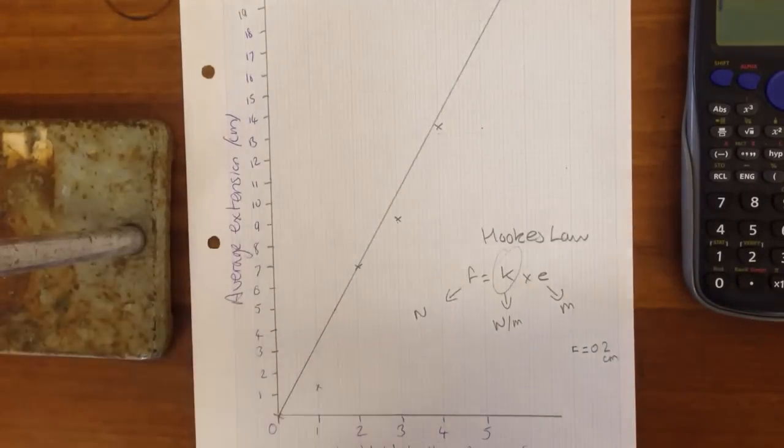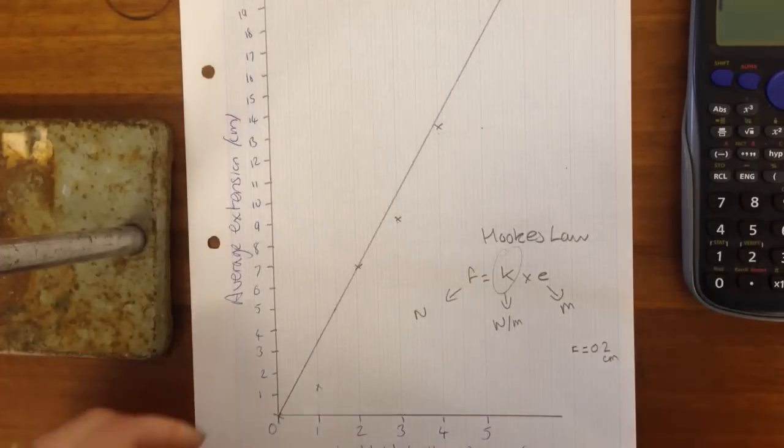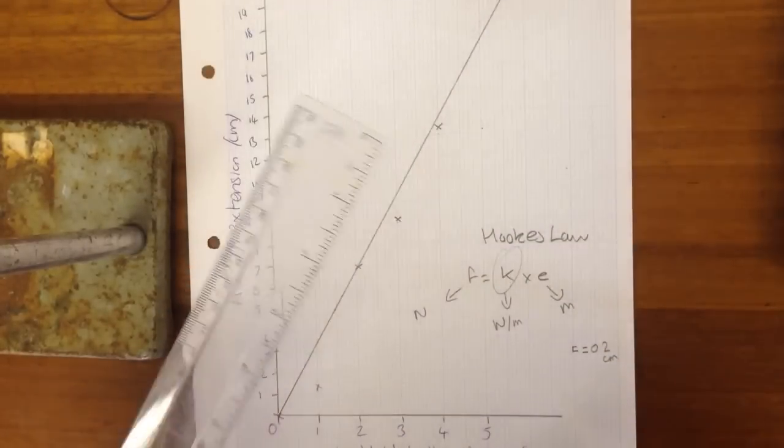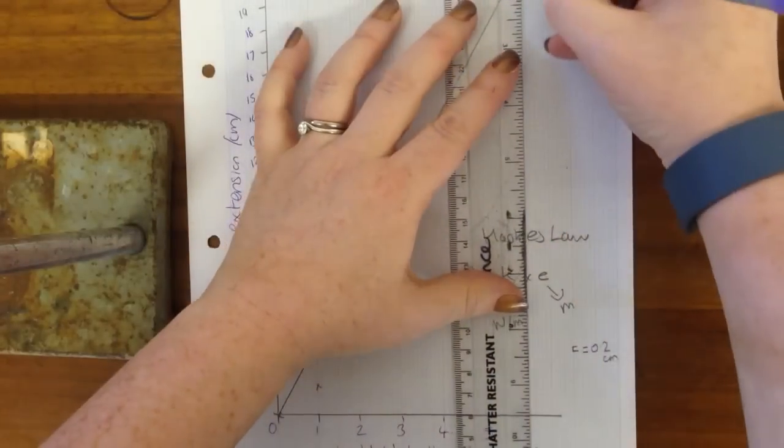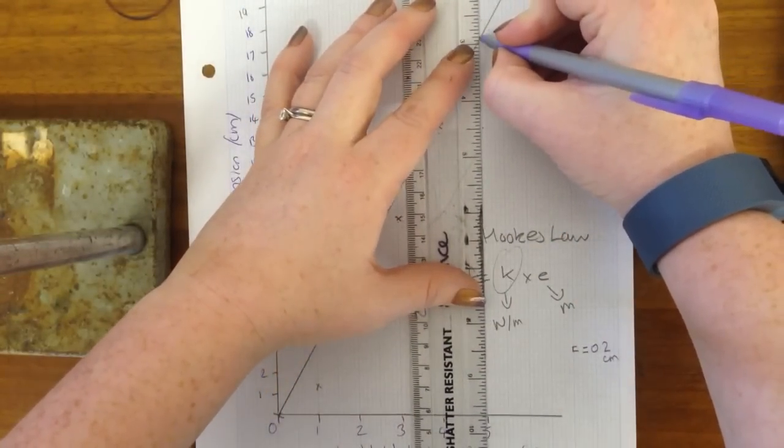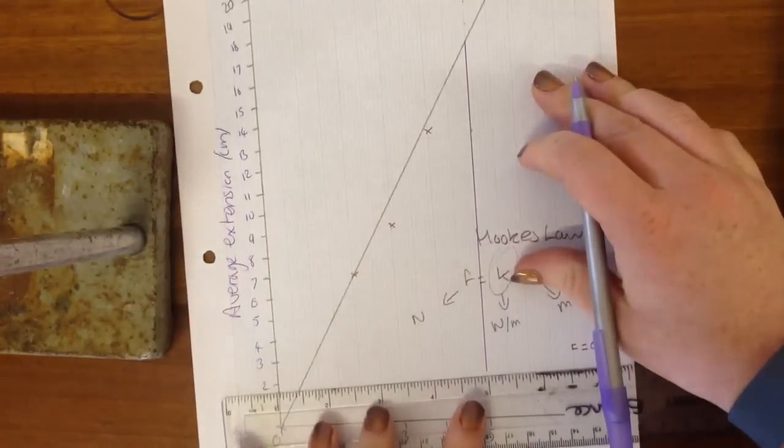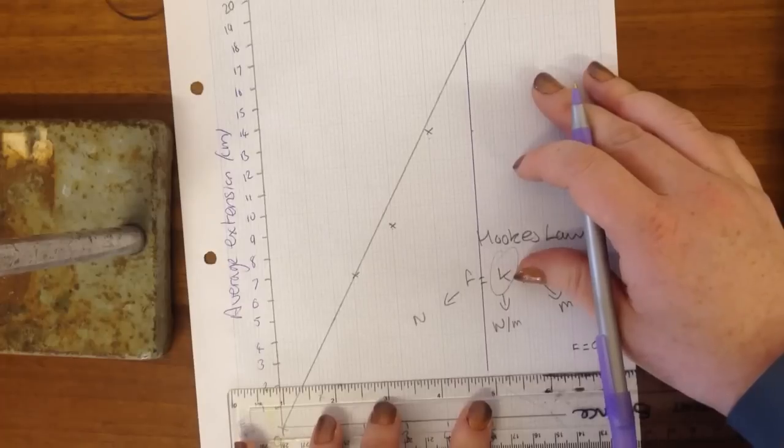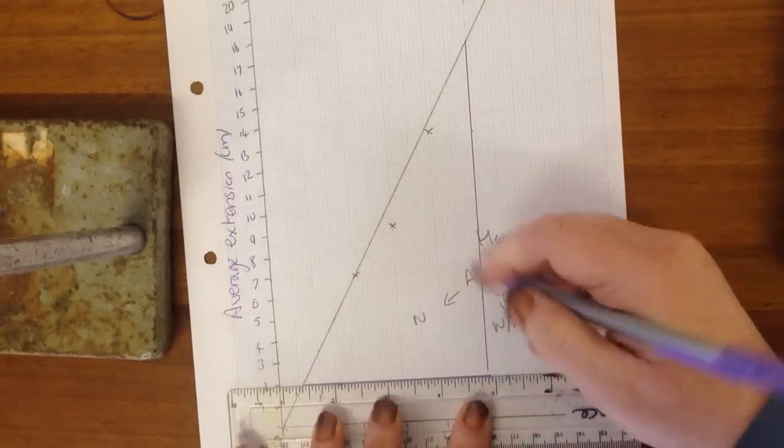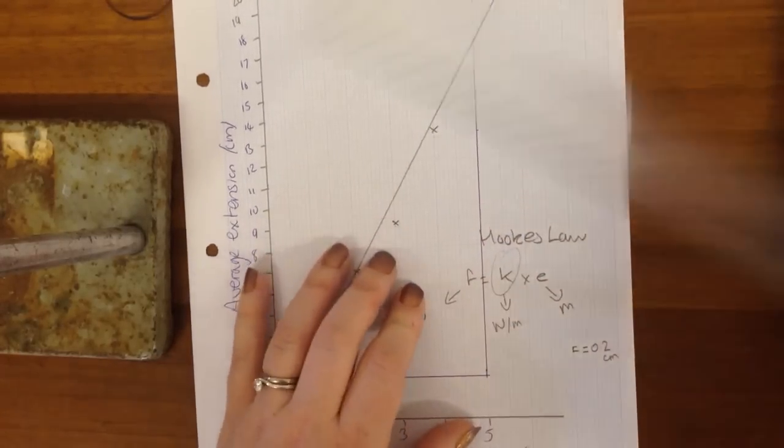So the good thing is we don't need to go and look at every single experiment we did individually. We can work out Hooke's law from the gradient of the line. So the bigger triangle you draw for this, the better. So I'm going to go from here to here. So it really doesn't matter where you draw a triangle just as long as you draw a nice big triangle.